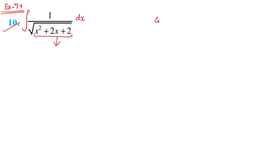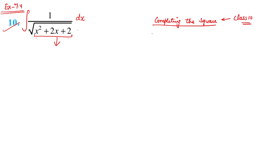We will use the completing the square method, which we studied in class 10. Even if you haven't studied it, there are just two or three simple steps. By using the completing the square method, you can make it a perfect square, and then apply the formula.